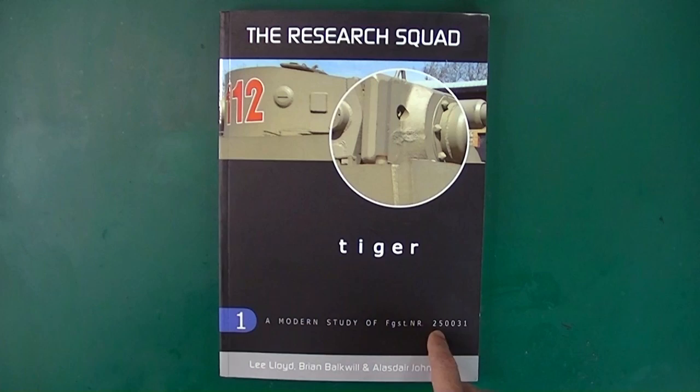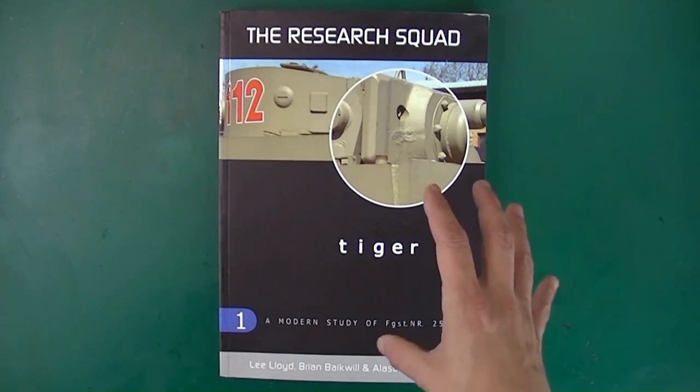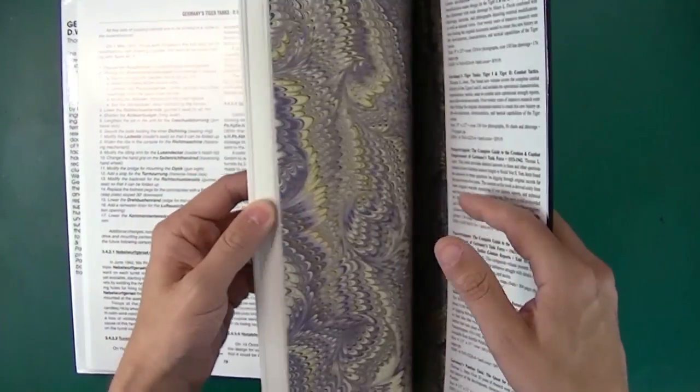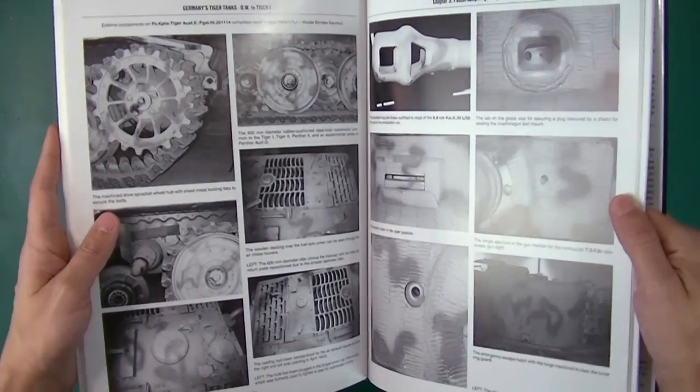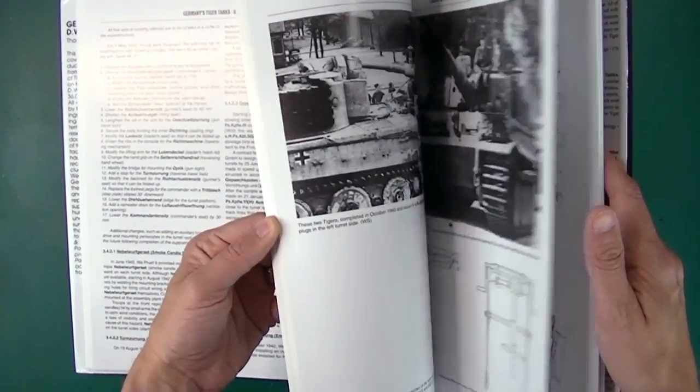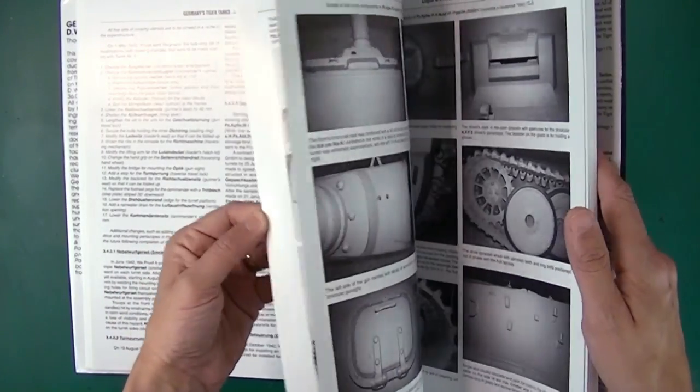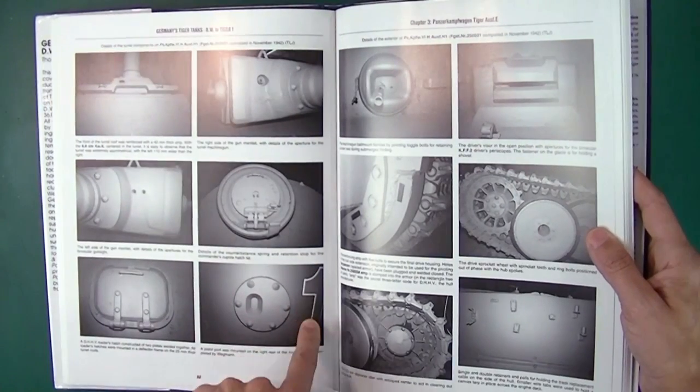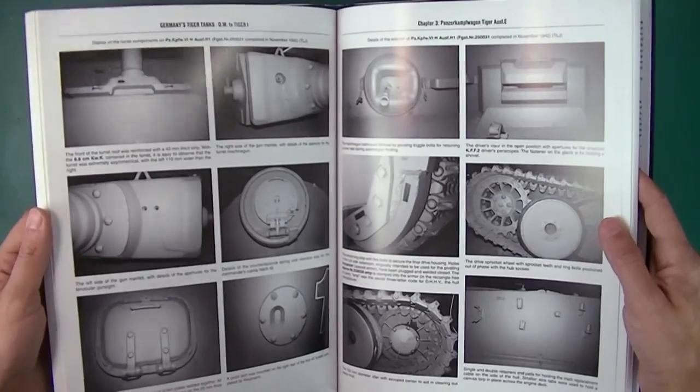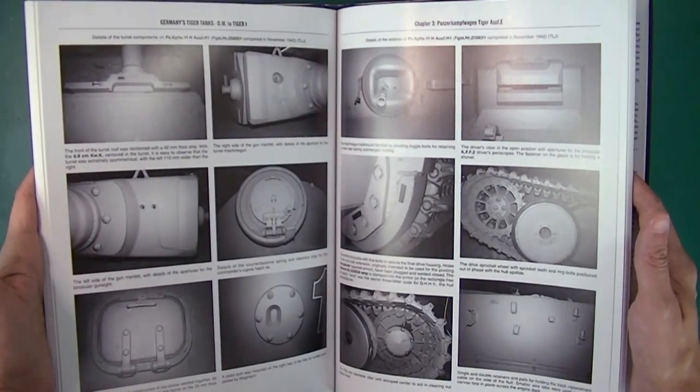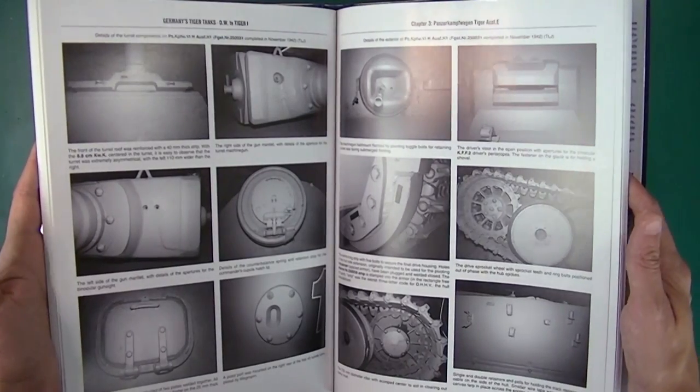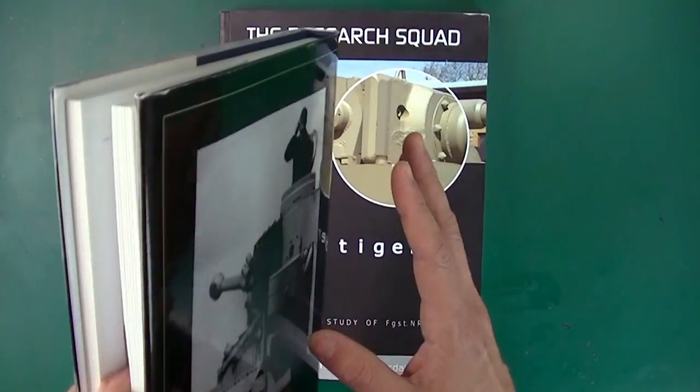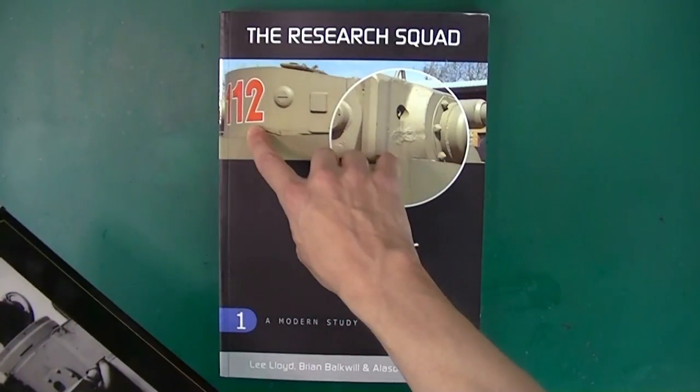So what this is, when they say a modern study of Fogerstell 250031, means it is a modern pictorial survey of this vehicle. A good chunk of what makes up DW to Tiger 1 is very similar surveys of surviving Tigers. Very high quality pictures, but in black and white and not as extensive. So right here, 250031, this is the exact same tank. You can even see there's the really poorly renumbered turret. A lot of this has been done, so to speak, but not to the level and quality that these guys did it at. Plus it's recent.